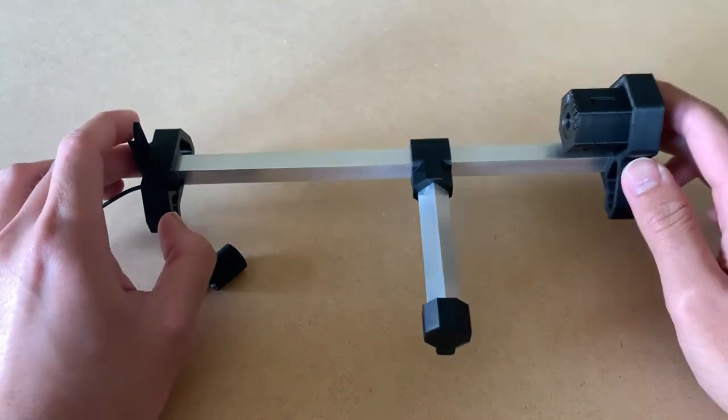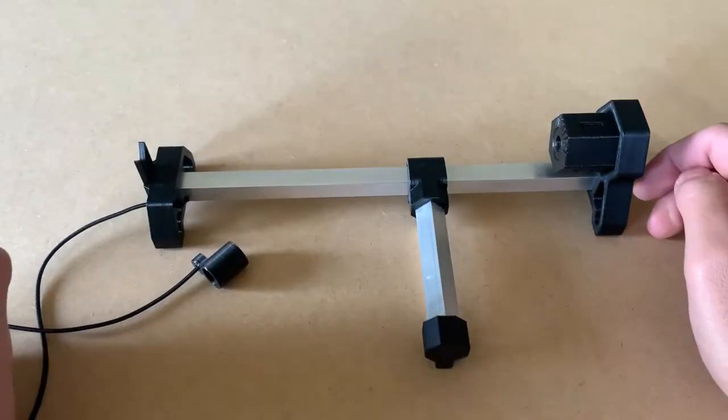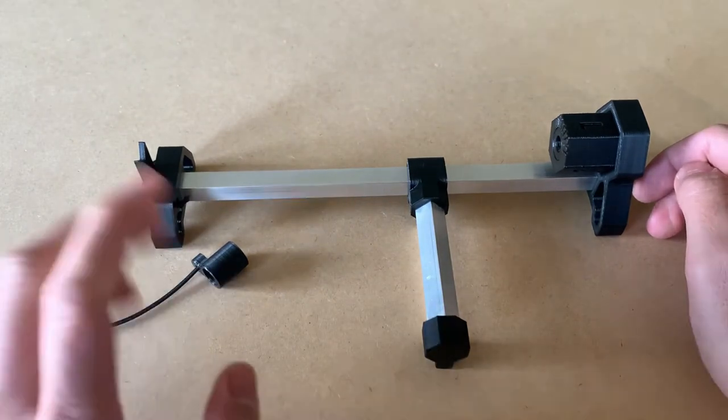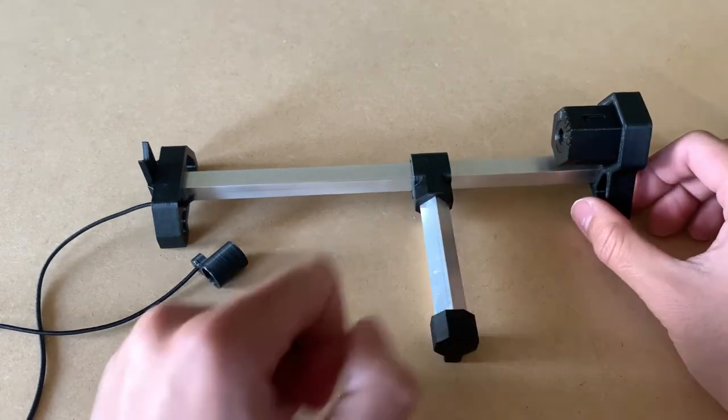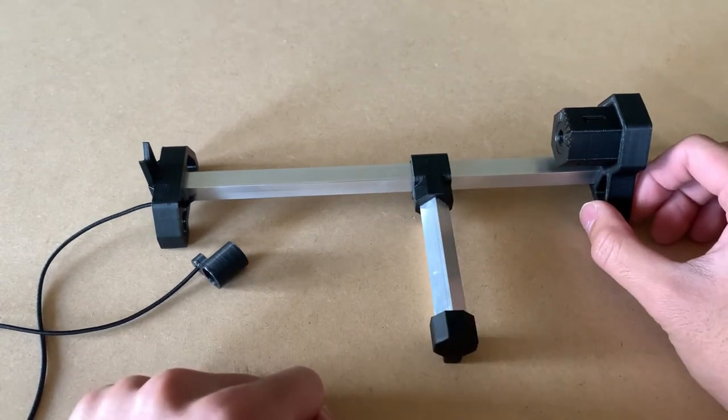Here we have the jig itself. There are a few adjustments that we have to do before fletching an arrow: first is the arrow height adjustment, the rotation adjustment, and the fletch placement adjustment.